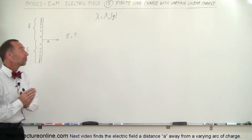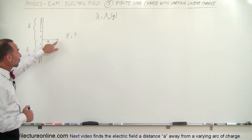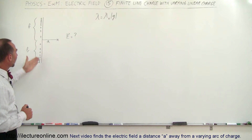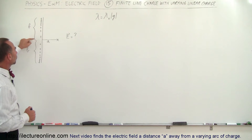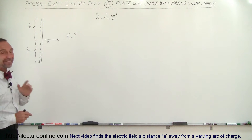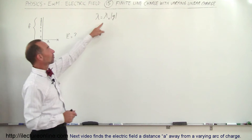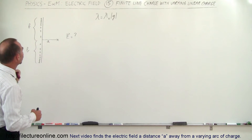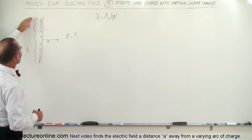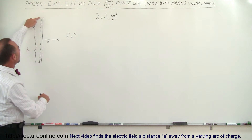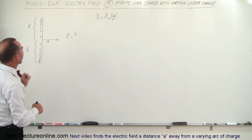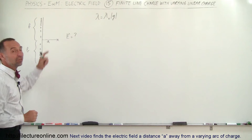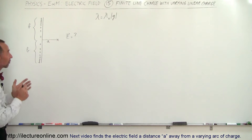Welcome to Electronline. Let's find the electric field strength and direction at a location due to a nearby line of charge. The linear charge density is not constant — it varies as a function of position or distance away from the center of the line charge. The length of the line is 2b, with b above and b below the center, and a is the perpendicular distance from the line charge to the point where we want the electric field.